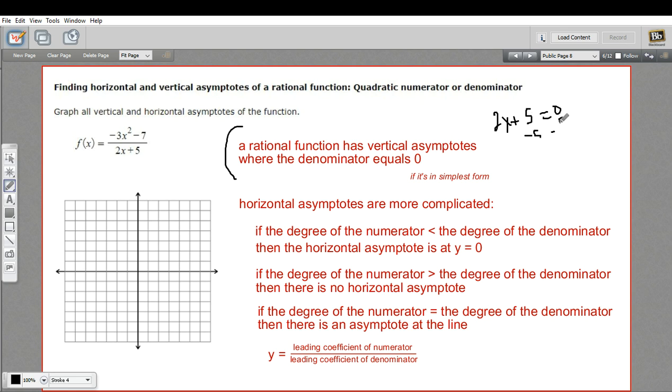Subtract 5. I get 2x equals negative 5. Divide by 2. And we get x equals negative 5 halves. So that is the equation for the line of our vertical asymptote.